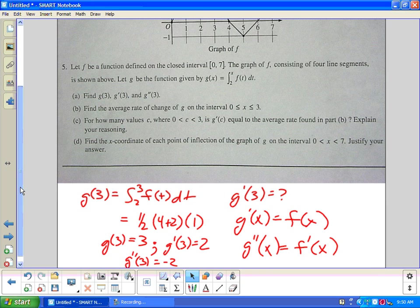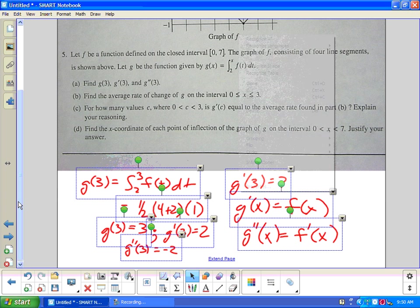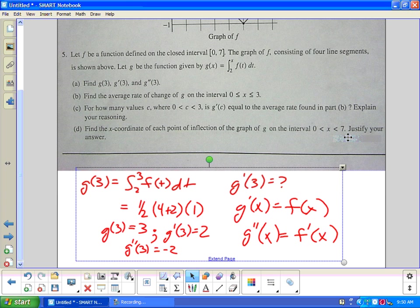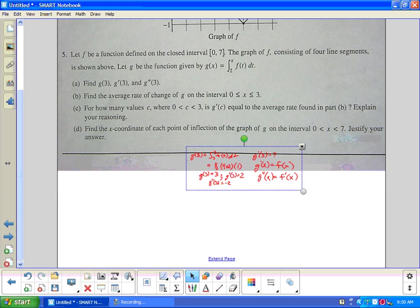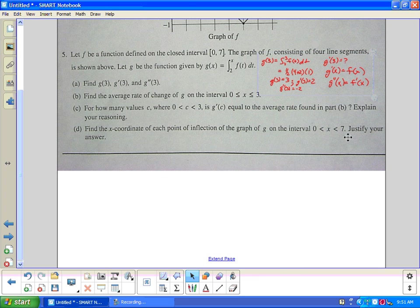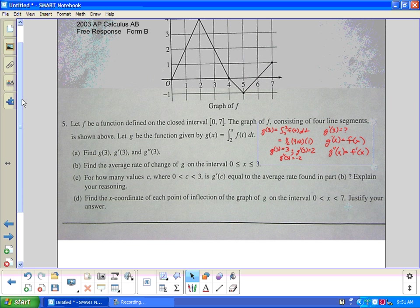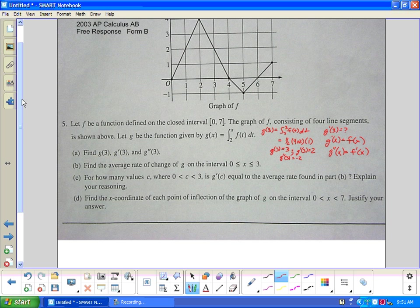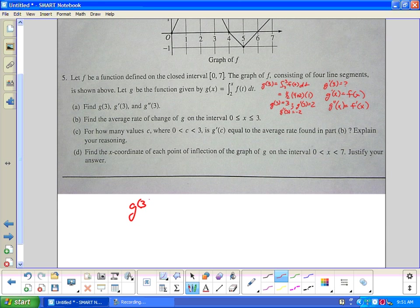And again, I'll score these at the end. But I would say those are the complete answers for letter A. Put those over here where I can just read them. I would imagine that it would award points just for the values. The next letter B, find the average rate of change of g on the interval 0 to 3. The average rate of change of g. Well, the average rate of change is going to be g(3) minus g(0) over 3 minus 0.